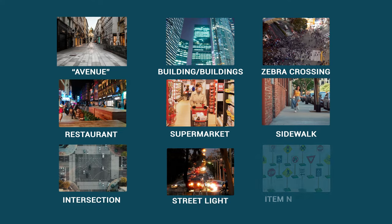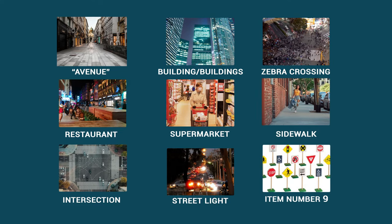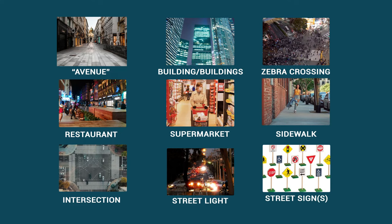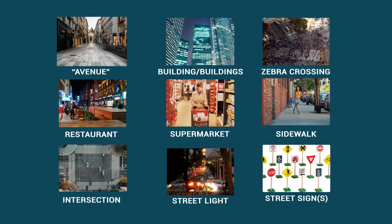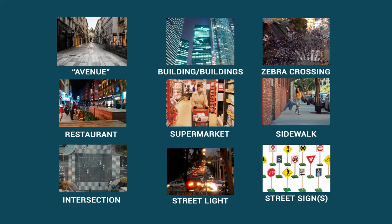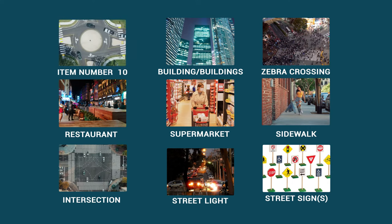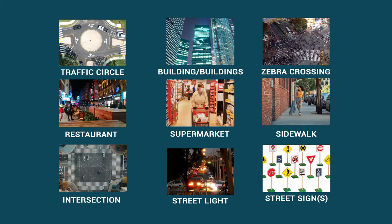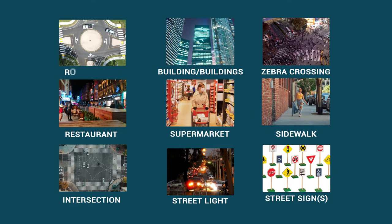Item number nine: street signs. Actually, you will never see all of these street signs together. Item number ten: traffic circle. Some people might say roundabout.